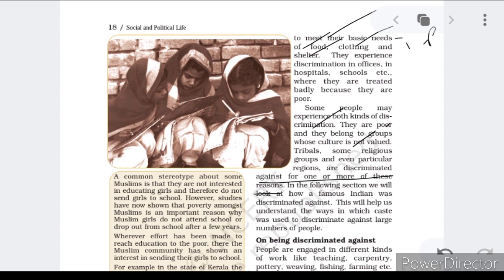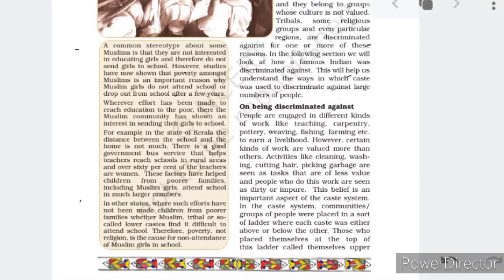We will look at how a famous Indian was discriminated against, to understand the way in which caste was used to discriminate against a large number of people. The next topic is on being discriminated against — we will learn about which categories of people are discriminated against most. People are also discriminated against based on the occupation they do. People are engaged in different kinds of work like teaching, carpentry, pottery, weaving, and fishing to earn a livelihood.